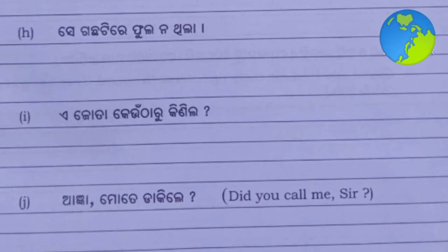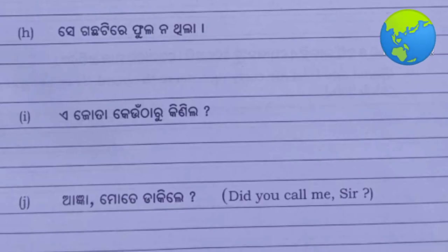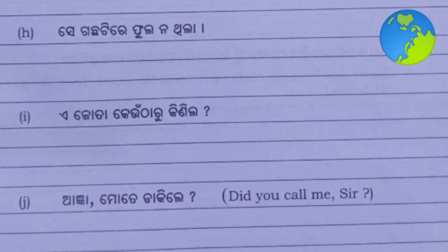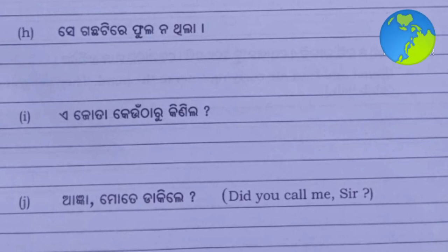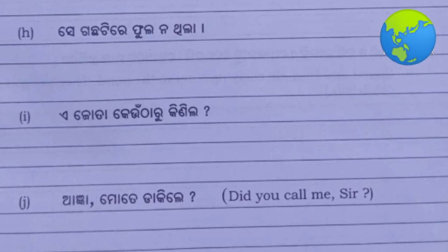Number G: 'Kali, sige kachati ri phu lo na thila' - translation: 'There was no flower in that tree yesterday.'